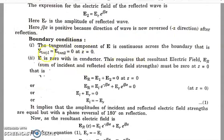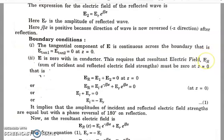The boundary conditions applied here are: first, the tangential component of E is continuous across the boundary, i.e., E_tan1 = E_tan2 = 0 at z = 0; second, E is zero within the conductor. This requires that the resultant electric field — the sum of the incident and reflected waves — must be zero at z = 0. Therefore, the resultant electric field Er = E1 + E2 must equal zero at z = 0.